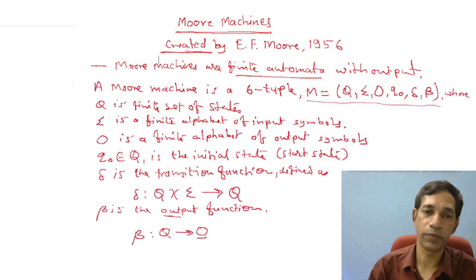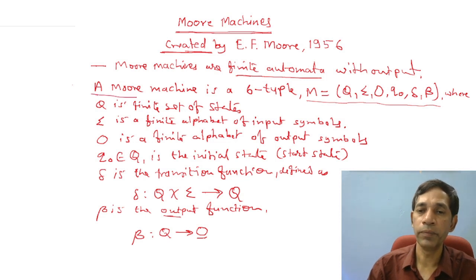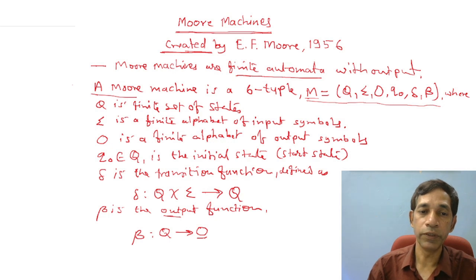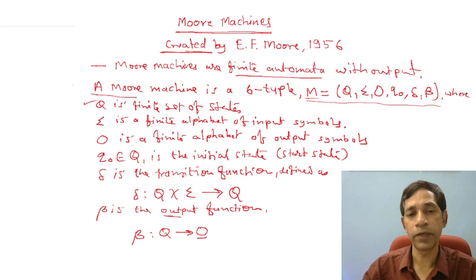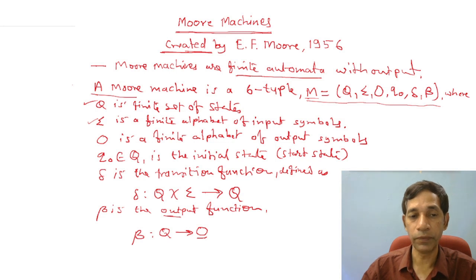A Mealy machine is a collection of six things. Formally, you can define a Mealy machine as a six-tuple: M = (Q, Σ, O, q0, δ, β), where Q is a finite set of states, and Σ is the finite alphabet of input symbols. Your input string consists of symbols from Σ. Now you need to define what symbol you want to print, so O is the finite alphabet of output symbols.